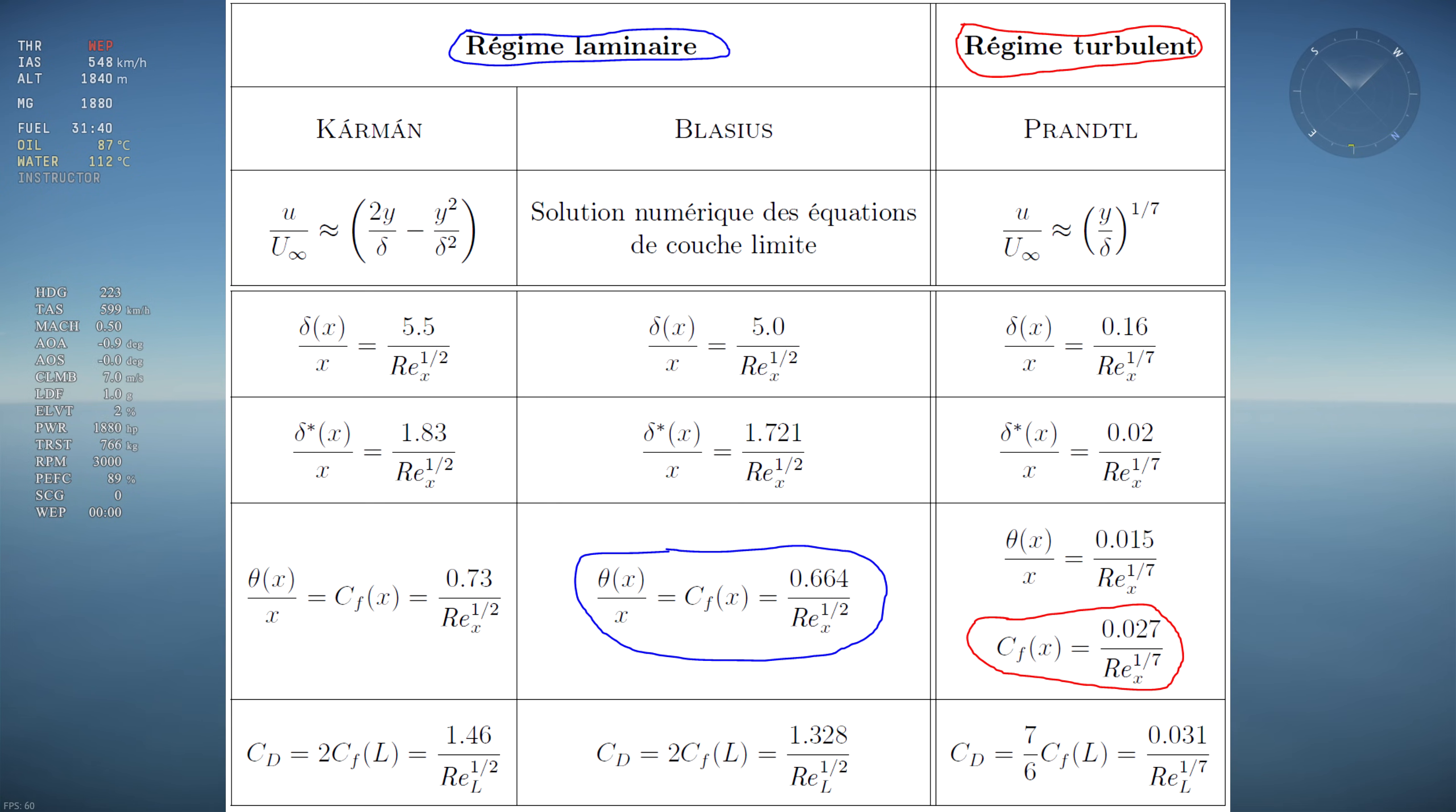The equations are based on the Reynolds number, which is a convenient number that takes everything I said into account for the calculations, such as viscosity, speed, and chord position. By separating the 2m average chord of the P-51 into 200 smaller sections, and by calculating the skin friction coefficient for every section, we get the skin friction coefficient as a function of chord graph for the typical airfoil.